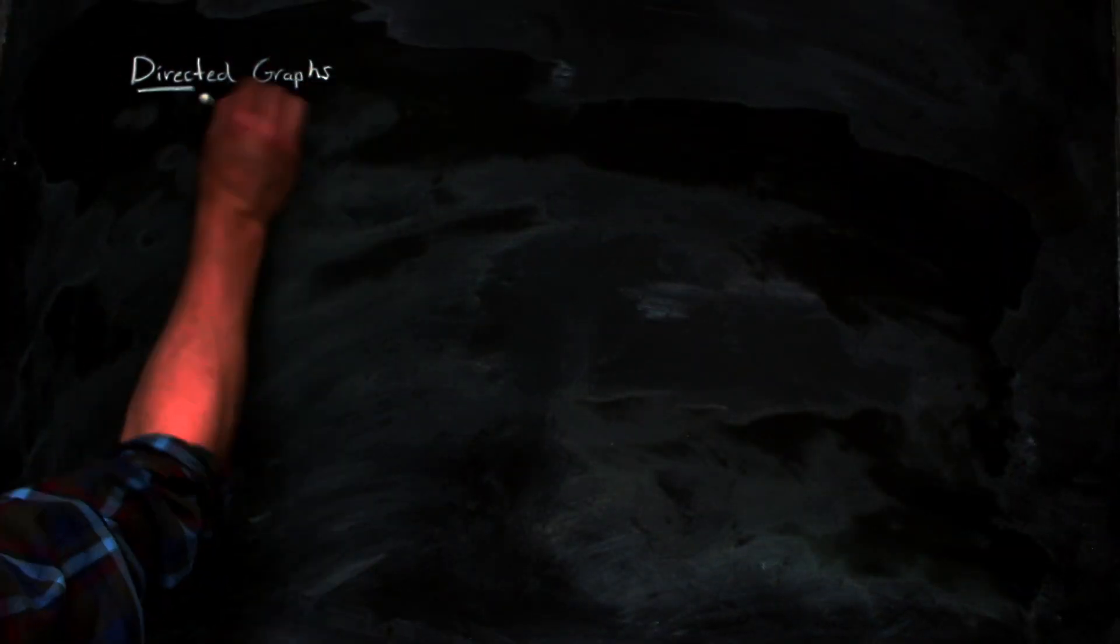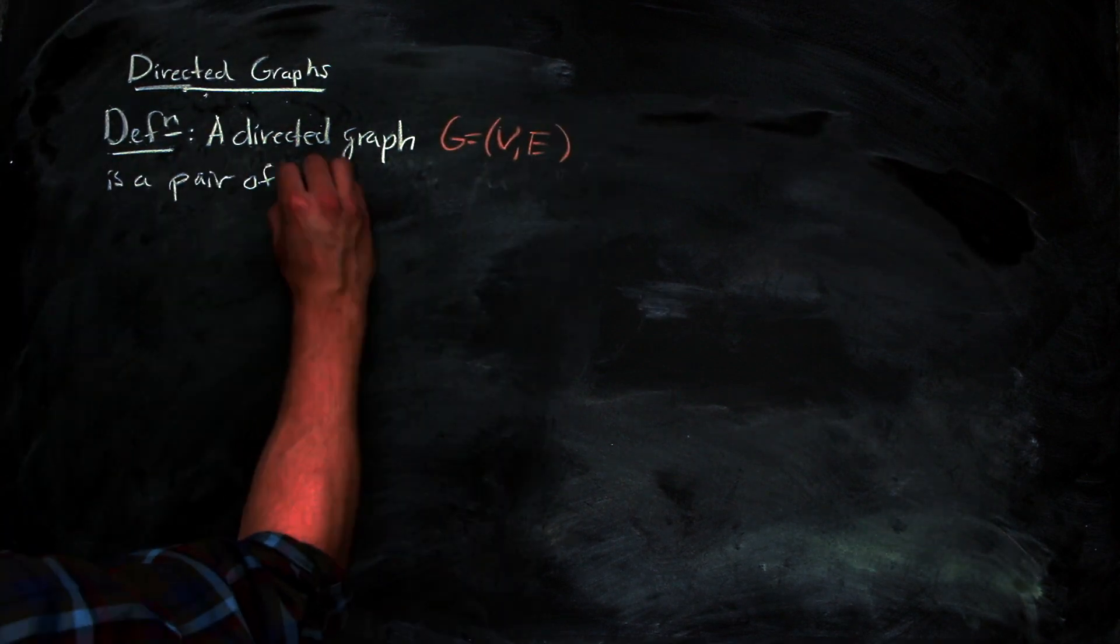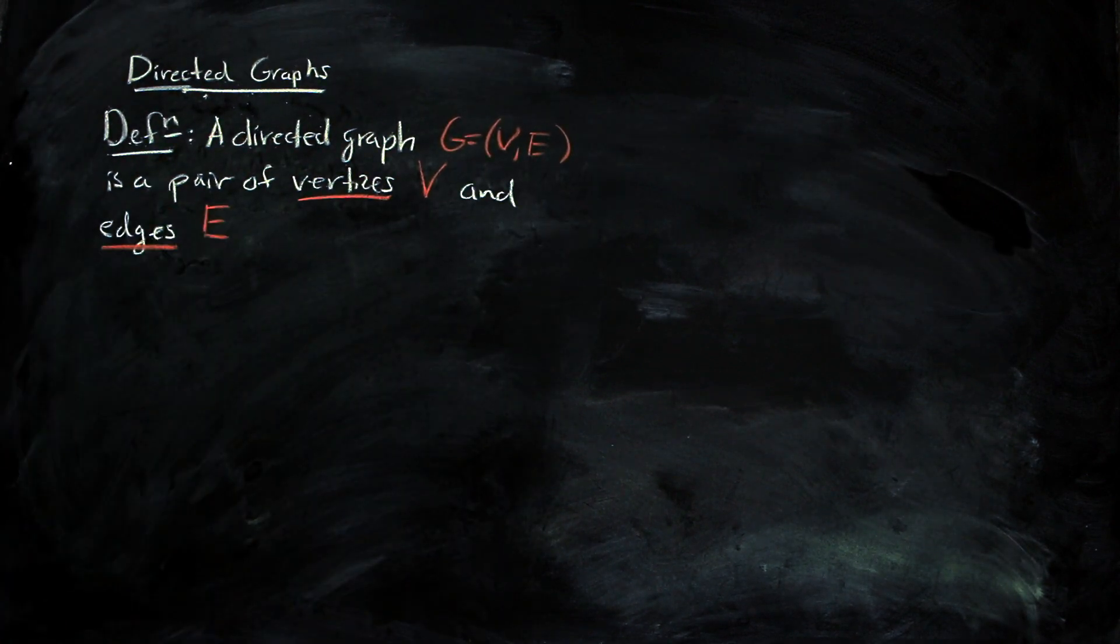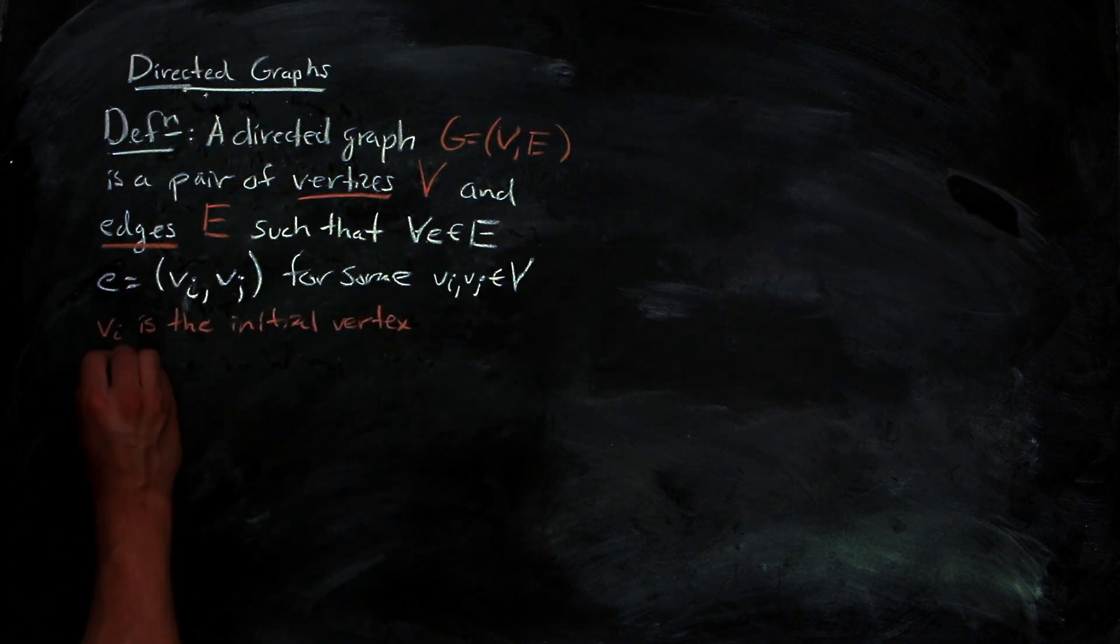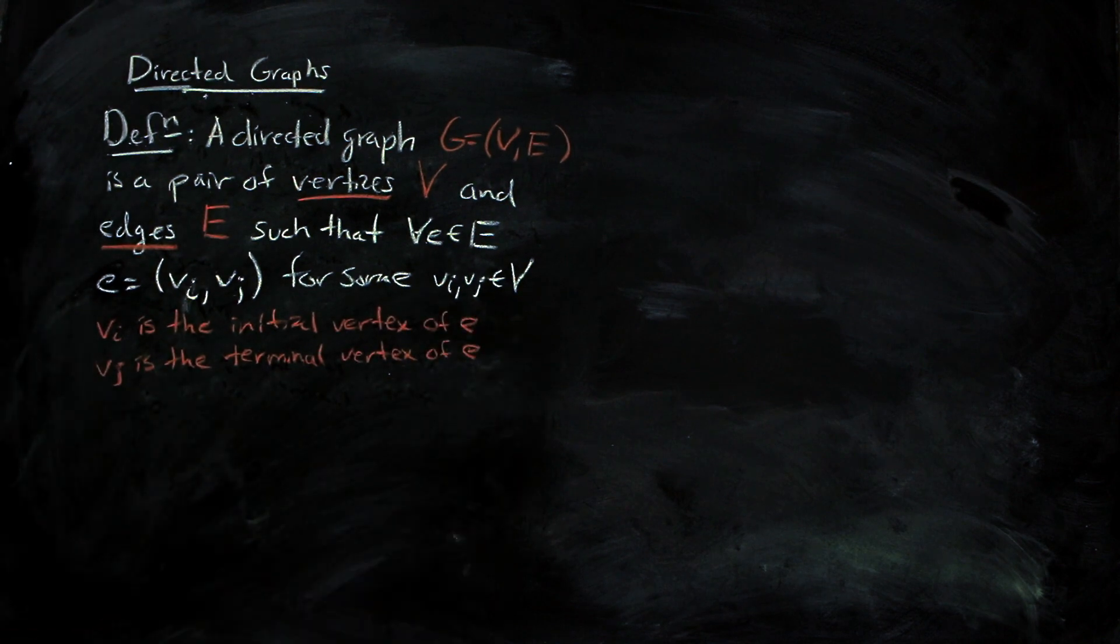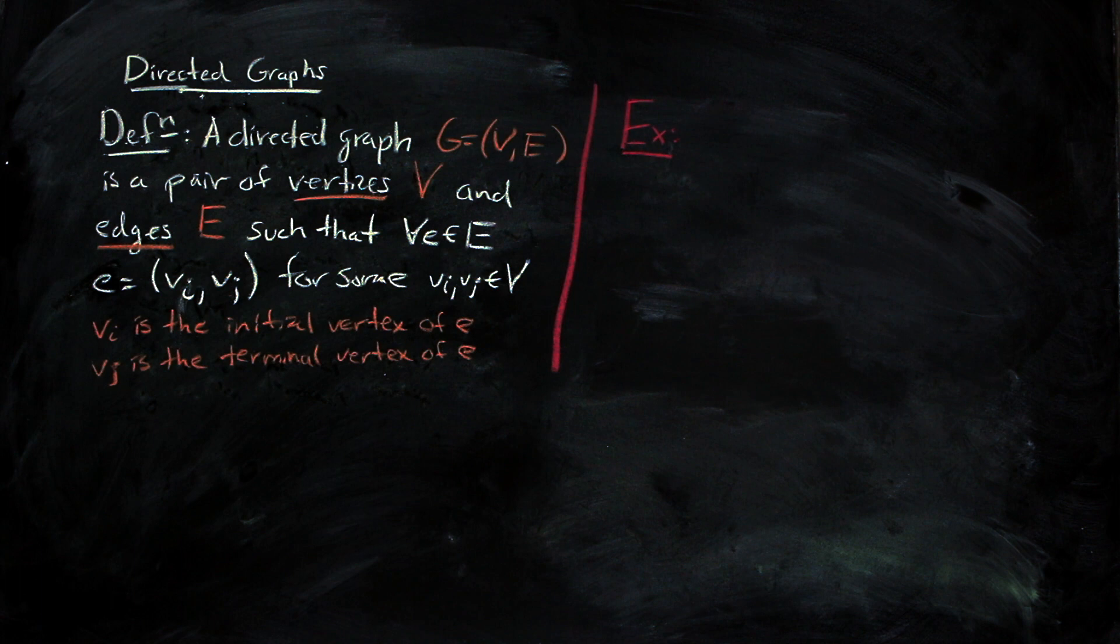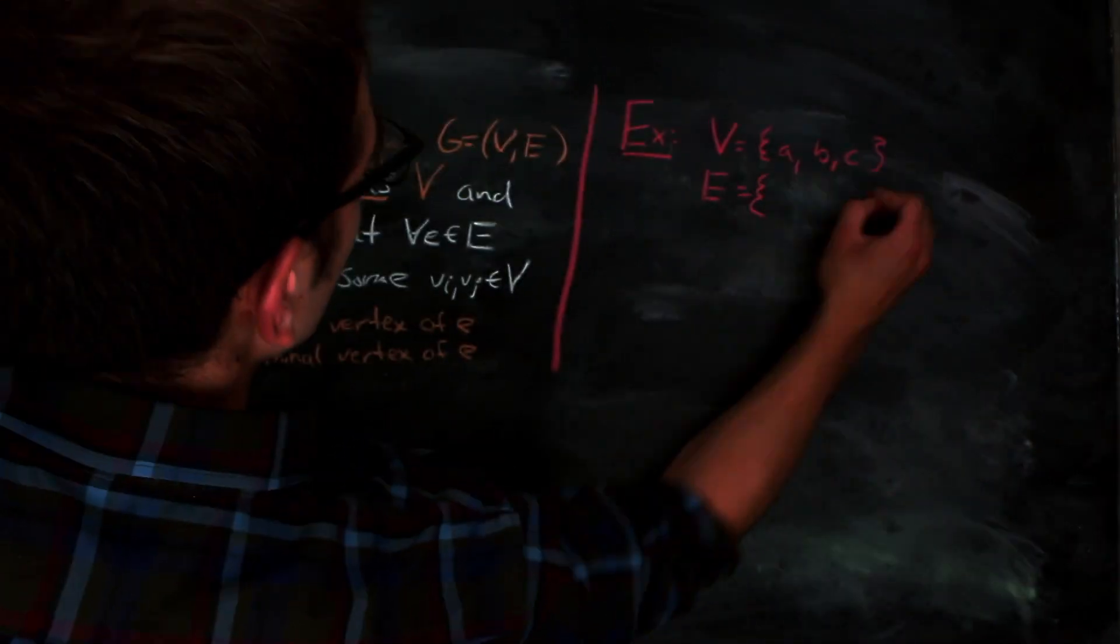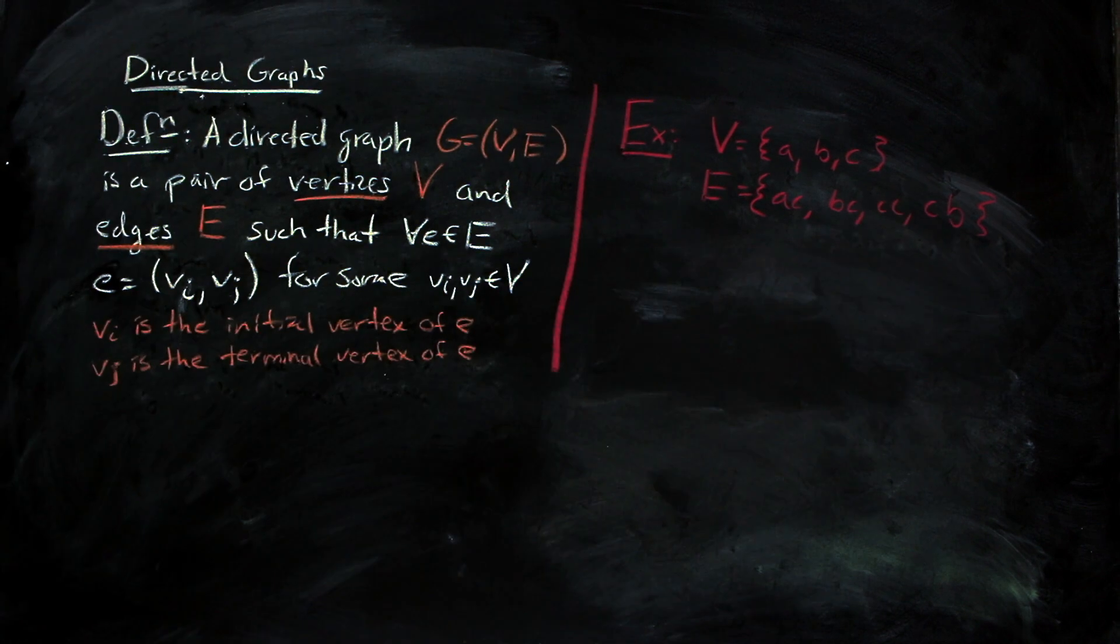First off, a directed graph is a collection, G, of a set of vertices, V, and a set of directed edges, E, where the elements of E are pairs of elements in V, where the first element of a pair is the initial vertex, and the second element of a pair is the terminal vertex. So, for example, if we had this graph, G, where V is the set of A, B, and C, and E is the set of AC, BC, CC, and CB,